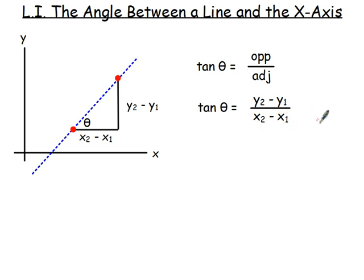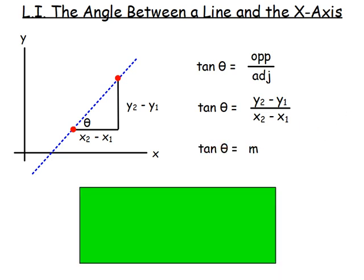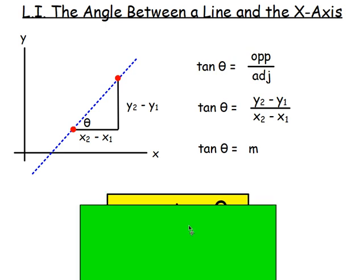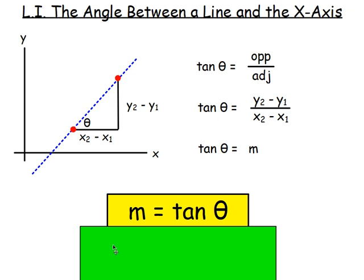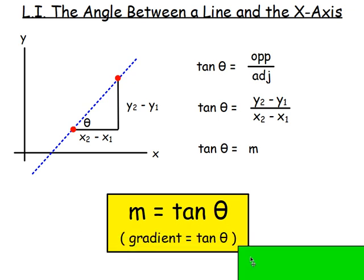Yes — y2 minus y1 over x2 minus x1 is really your gradient formula. So we could say TAN theta equals y2 minus y1 over x2 minus x1. That means TAN theta equals m, and this brings us to our first main formula for Higher: m equals TAN theta. In other words, the gradient equals TAN theta.